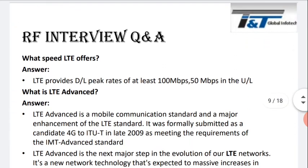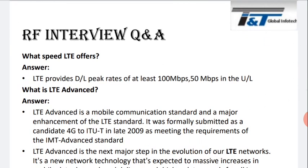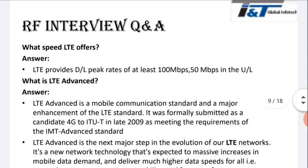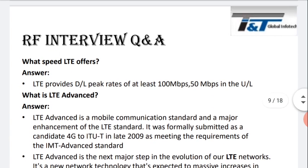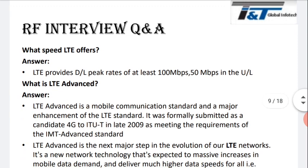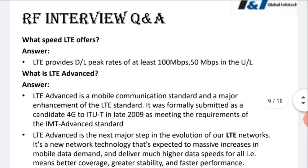What is the speed LTE offers? LTE provides a downlink peak rate of at least 100 Mbps and an uploading speed in the uplink. But if we go through practical networks, it is not achieving that. LTE technology is considered 3.9G. The peak rate is at least 100 Mbps theoretical, but in practical networks we are still not able to achieve 100 Mbps or 50 Mbps in uplink and downlink.